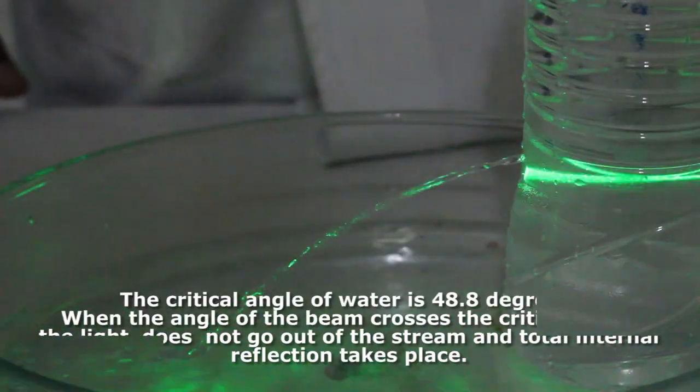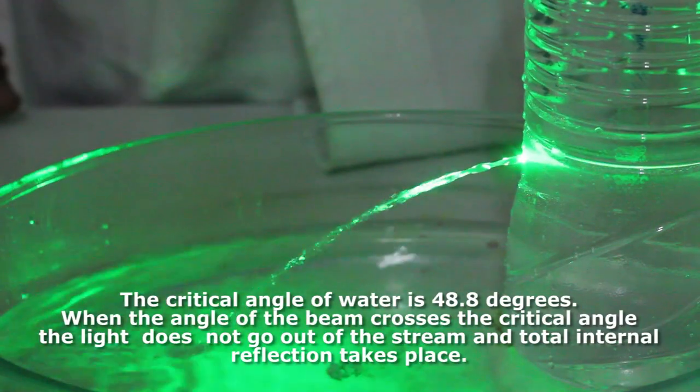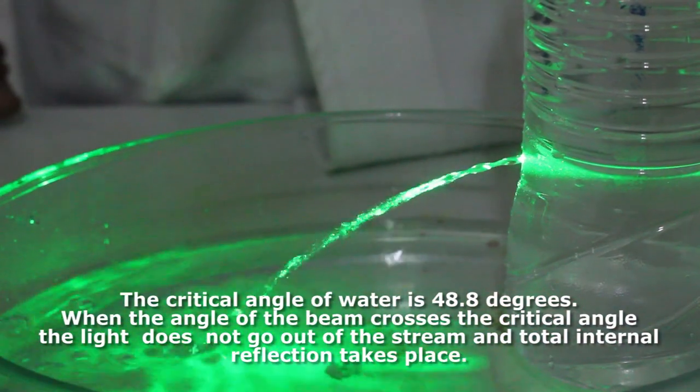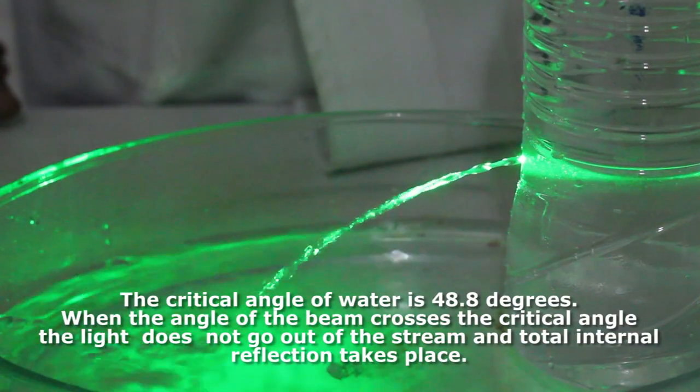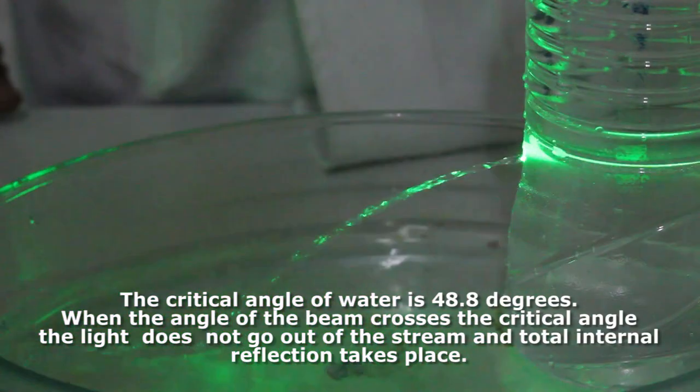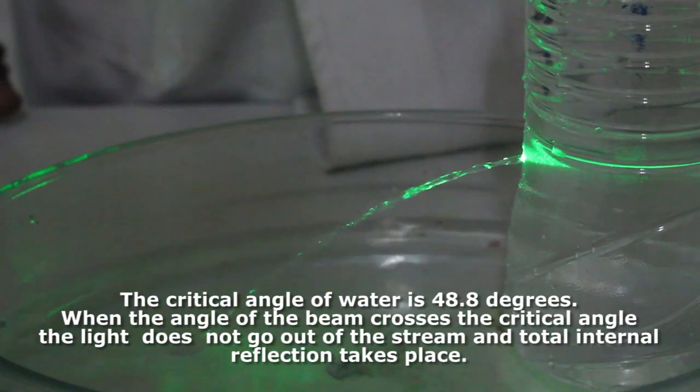The critical angle of water is 48.8 degrees. When the angle of the beam crosses the critical angle, the light does not go out of the stream and total internal reflection takes place.